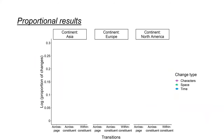That's why we did extra proportions — because if we looked at changes happening in within layout constituents and there are more within layout constituents, automatically the result might show more changes there. So we looked at the total amount of time, character, and spatial changes out of total amount of across-page transitions, across layout constituents, and within layout constituents. By having this proportion, we kept constant the unequal numbers of constituents, so we can compare the results better.